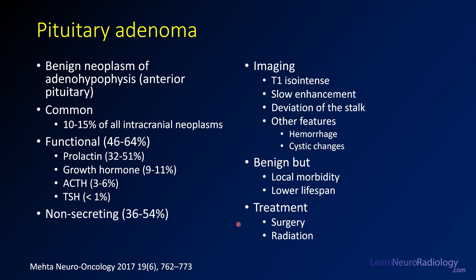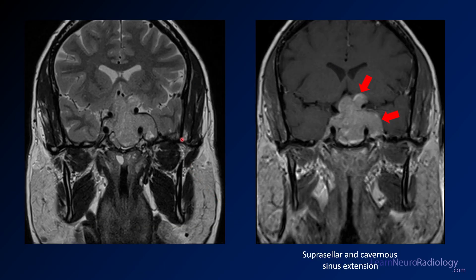Here on the T2 you have a slightly hyper-intense to gray matter lesion centered in the sella, also going into both cavernous sinuses — a little more on the left. The description of these is often like a snowman — you can almost see this outline, with a head and a bigger thicker body. In this case the adenoma is extending to the suprasellar region and extending beyond the cavernous sinus, so both of those structures are involved.